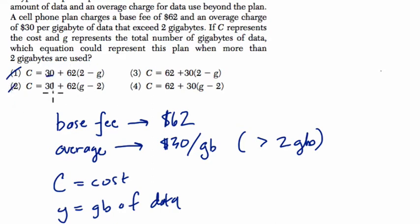So I'm going to cross out 1 and 2 because it's starting off at $30 and then adding on a rate, but we know we're starting at $62 here and here and then adding on some rate.